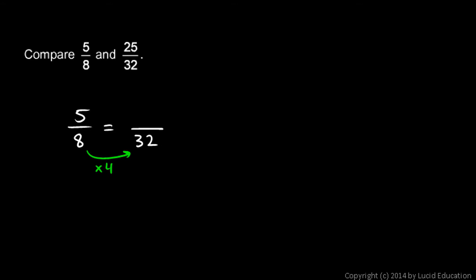So if I multiply the denominator by 4, I also have to multiply the numerator by 4. 5 times 4 is 20.